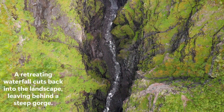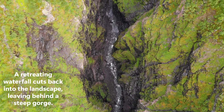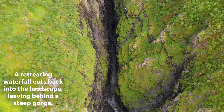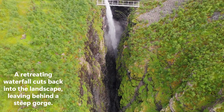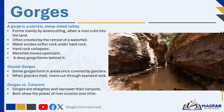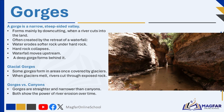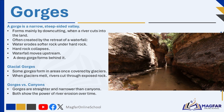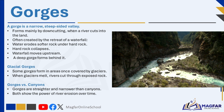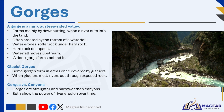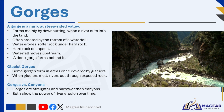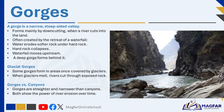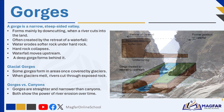Gorges and canyons are dramatic landforms created mainly by river erosion over long periods of time. They usually form in the upper course of a river, where the river has high energy and flows through steep, mountainous terrain. A gorge is a narrow, steep-sided valley that forms when a river cuts down into the land through a process called downcutting. One of the most common ways a gorge forms is through the retreat of a waterfall — as water flows over a waterfall, it erodes the softer rock beneath the harder rock layer. Over time, this erosion causes the overhanging hard rock to collapse, and the waterfall moves slowly upstream. As this process continues, the river carves out a deep, narrow valley behind it — this is the gorge.